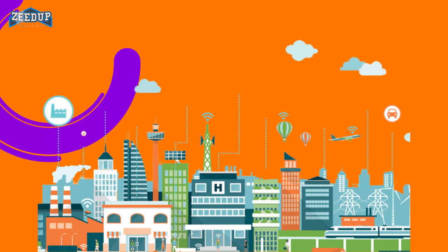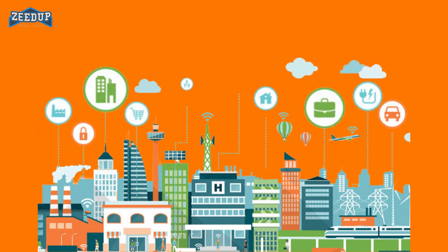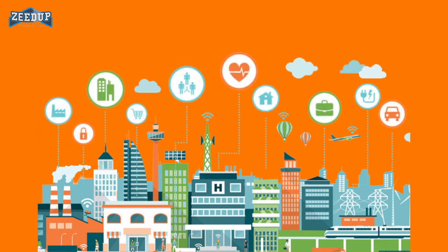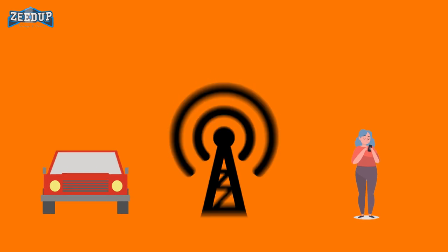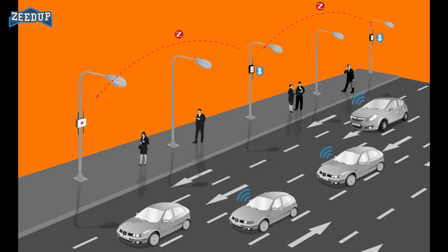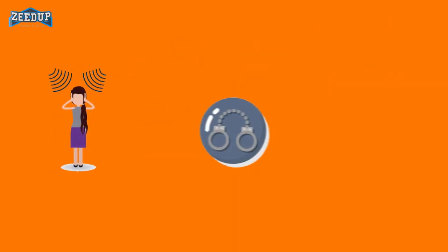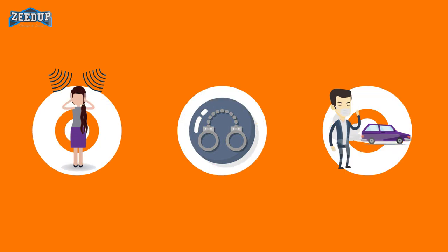Number 4: Smart cities. IoT has the potential to transform entire cities by solving real problems citizens face each day. With the proper connections and data, the Internet of Things can solve traffic congestion issues and reduce noise, crime, and pollution.